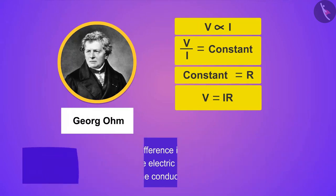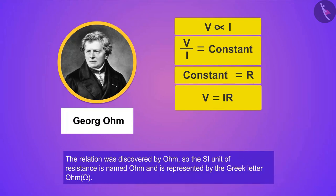The relation was discovered by Ohm, so the SI unit of resistance is named Ohm and is represented by the Greek letter Omega. If the potential difference across the two ends of a conductor is 1 Volt and the current through it is 1 Ampere, then the resistance R of the conductor is 1 Ohm. That is, 1 Ohm equals 1 Volt divided by 1 Ampere.